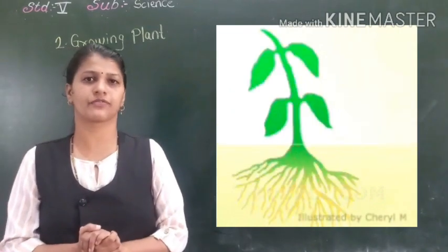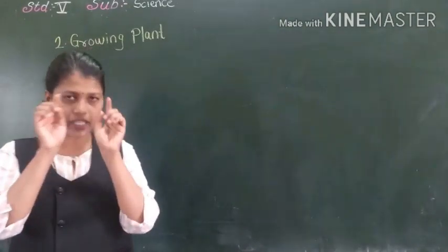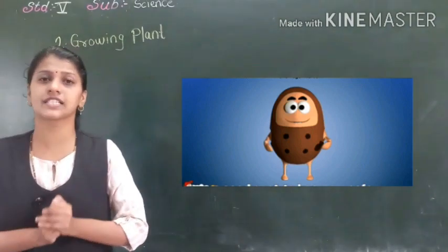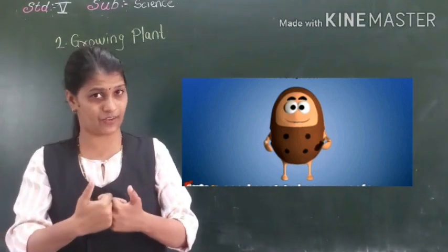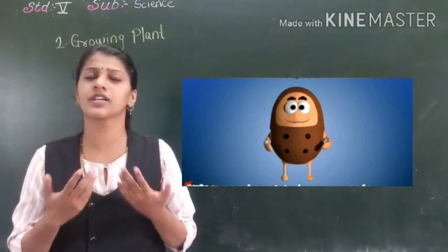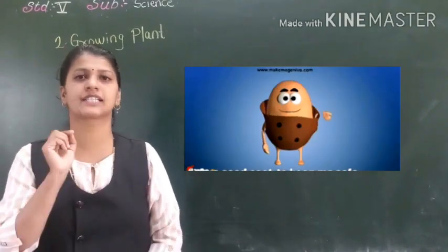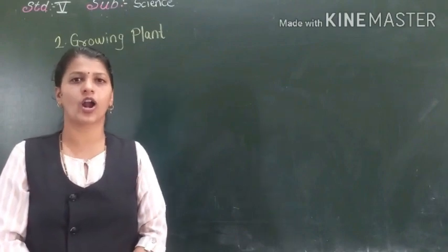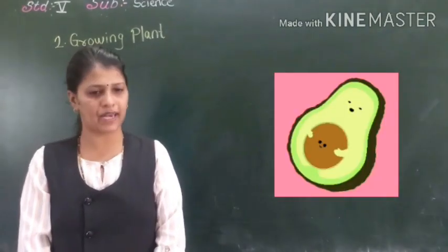Now we will learn about the structure of a seed. The outer covering of a seed is called the seed coat. Just like a sun coat protects us from the sun, the seed coat protects the baby plant inside. Inside the seed coat, there is a baby plant, which is also called the embryo.